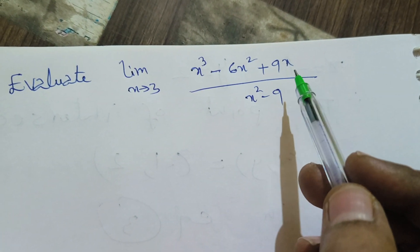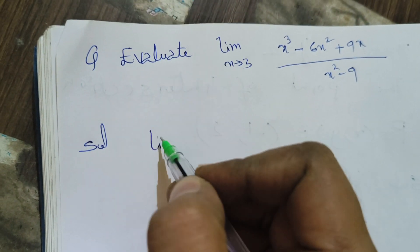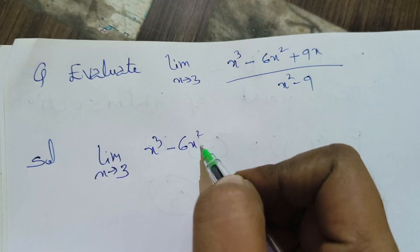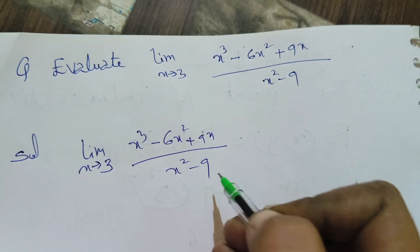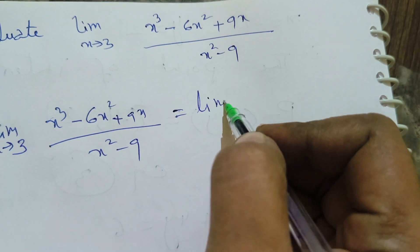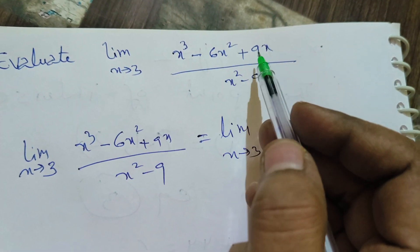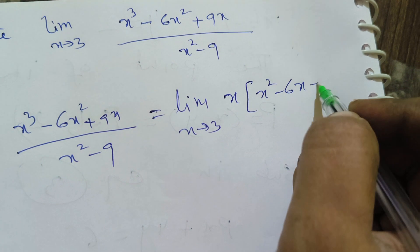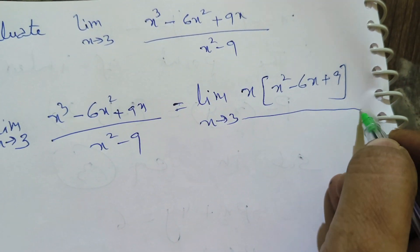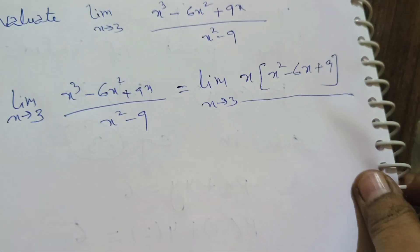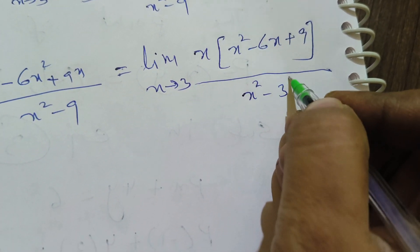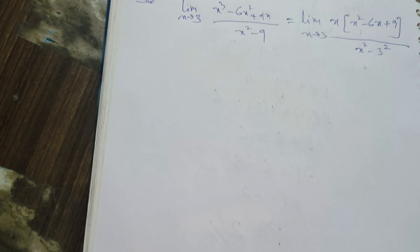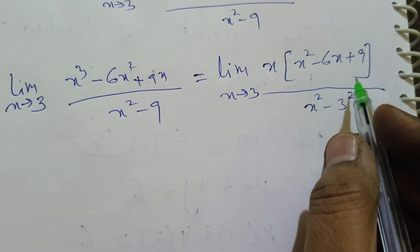To resolve this, we take x common from the numerator. So the expression becomes: limit x tends to 3 of x(x² - 6x + 9) / (x² - 9). The denominator x² - 9 can be written as x² - 3², and using the a² - b² = (a+b)(a-b) formula, this becomes (x+3)(x-3).